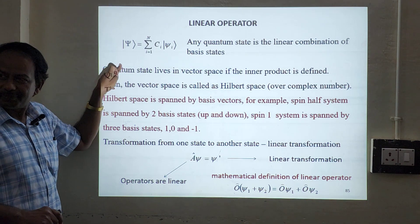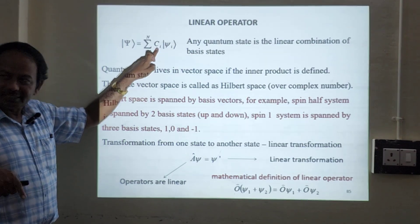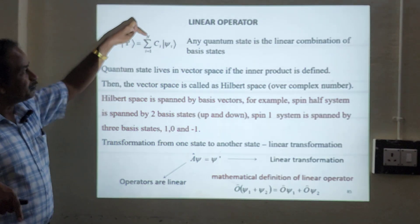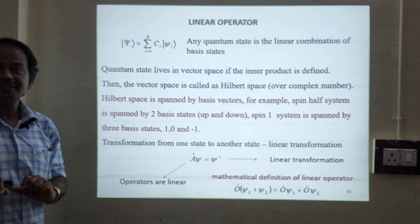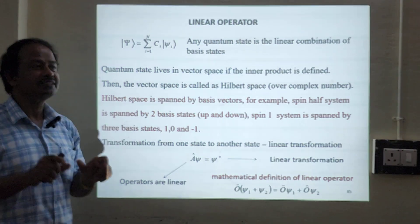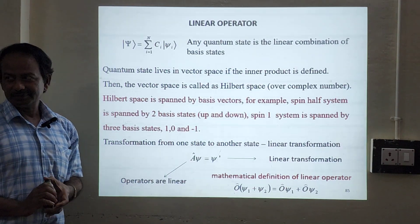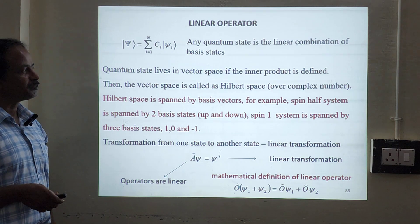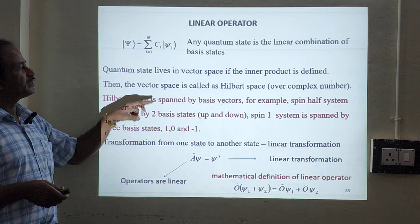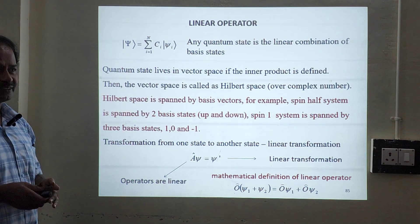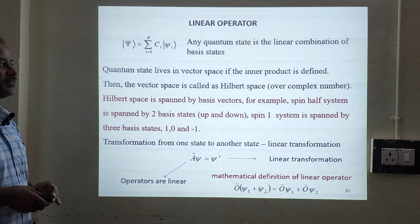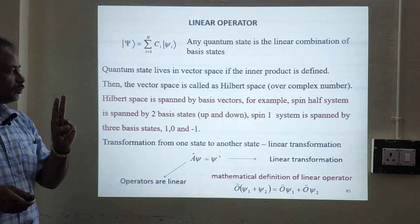Ci can be a complex number which contains real part and the imaginary part. So since it is a complex number, n dimension, and these basis states live in Hilbert space. So any quantum state is a linear combination of basis states in Hilbert space. So quantum state lives in vector space with the inner product — of course we'll have to define the inner product. So the vector space is called a Hilbert space over complex numbers.